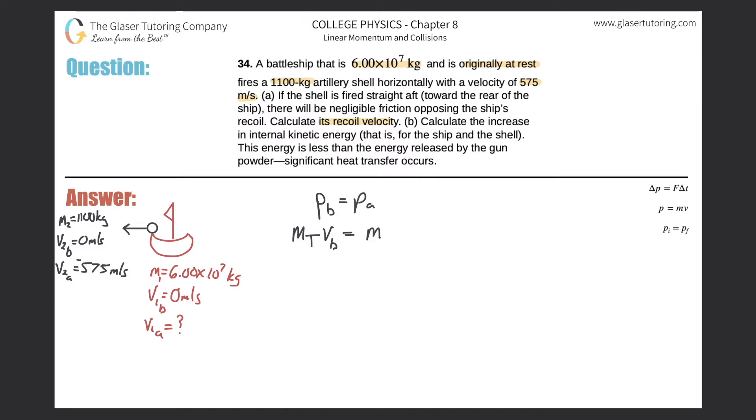Remember, the objects are separated after the collision or after the explosion. So I have the mass of the ship, because I called this sub 1, so it's the mass of the ship multiplied by the velocity of the ship after the collision. Plus the mass of the artillery shell, I called that 2, multiplied by the velocity of that artillery shell after the collision.